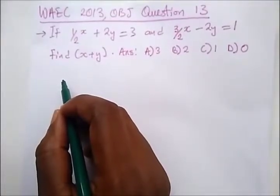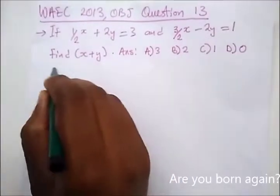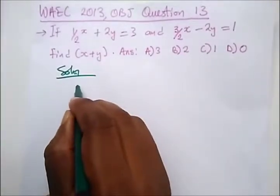It says if half x plus 2y equals 3 and 3 over 2x minus 2y equals 1, find x plus y. So here let's just use elimination method to be faster and easier for this.